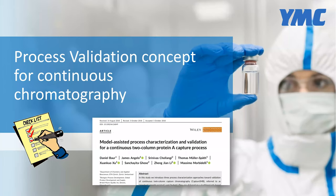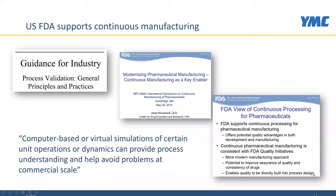Let's start with the process validation concept. The following slides are a summary of what is written in a paper co-authored by authors from industry and academia. As an introduction: continuous manufacturing is embraced by regulatory authorities. FDA supports continuous processing for pharmaceutical manufacturing because it offers quality advantages consistent with FDA quality initiatives. FDA also states that computer-based or virtual simulations of certain unit operations can provide process understanding and help avoid problems at commercial scale.